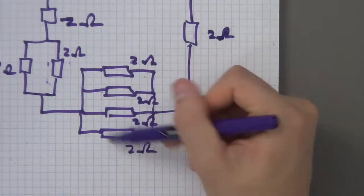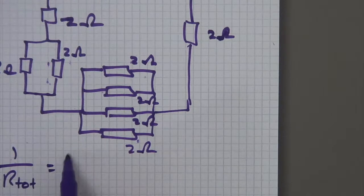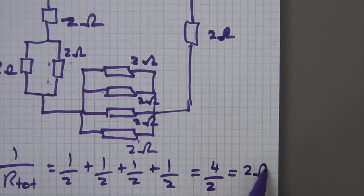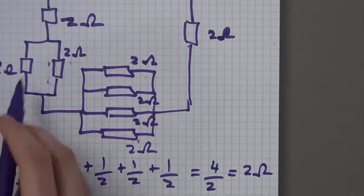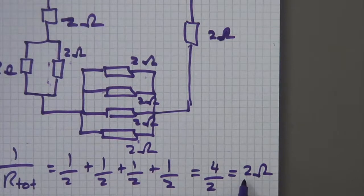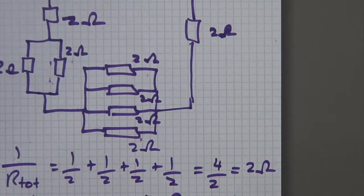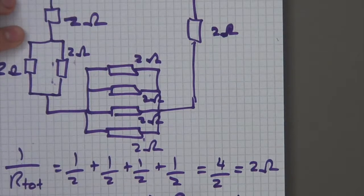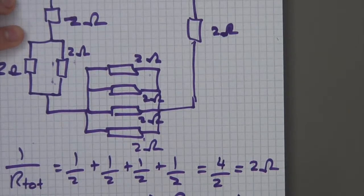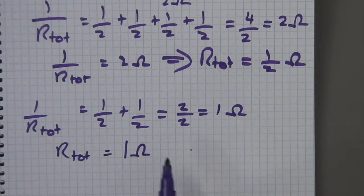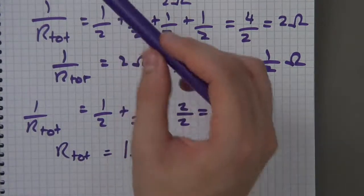Let's work out the total resistance of the first mini parallel circuit: 1/R_total = 1/2 + 1/2 + 1/2 = 3/2, so R_total = two-thirds — wait, I need to flip it: 1/R_total = 3/2, so R_total = two-thirds? Actually correcting: four over two equals two, but I need to flip — so R_total = one half ohm. For the second parallel section: 1/R_total = 1/2 + 1/2 = two over two = one, so R_total = one ohm.